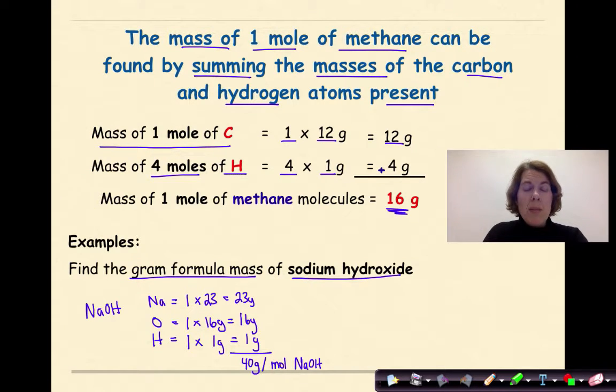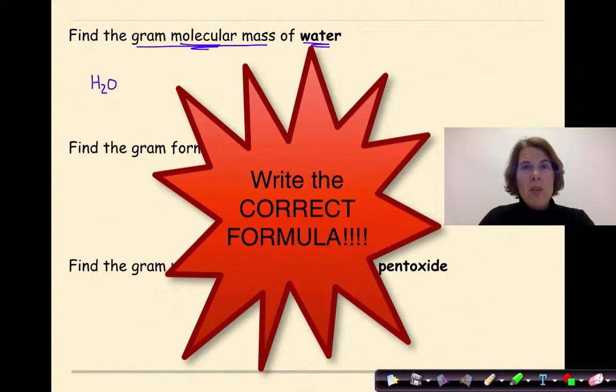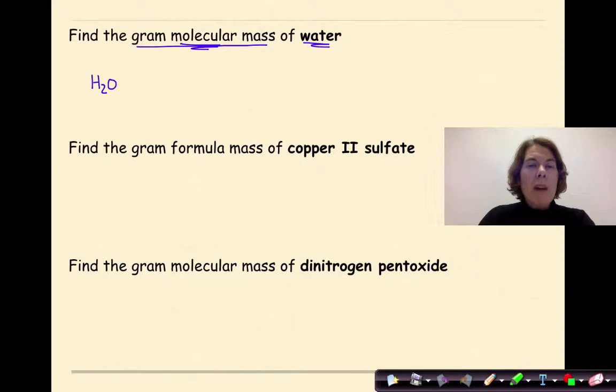Let's look at some other examples. Find the gram molecular mass of water. In this case, we can say molecular mass, because we know that water is a molecule. I could not say gram molecular mass with something like sodium hydroxide, because that is an ionic compound. So we know that the formula for water is H2O. The most important thing that you need to do is make sure that you write the correct formula. Then I'm going to list my elements. I have hydrogen and oxygen involved here.